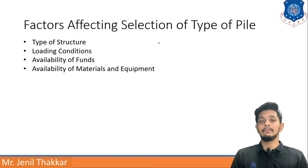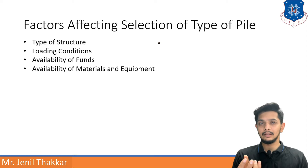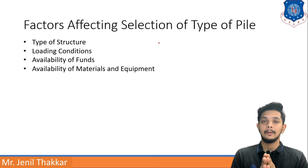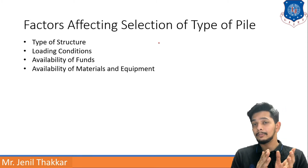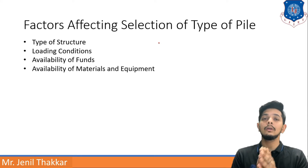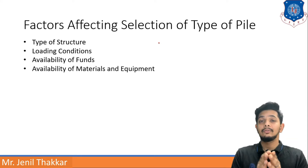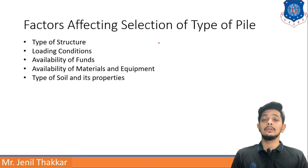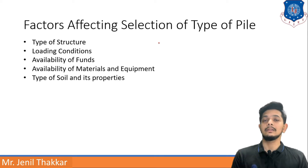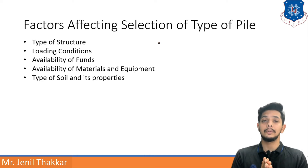Another factor is availability of materials and equipment. If material and equipment cannot be transported to a remote place, you should choose the pile type accordingly. For example, if you are choosing a precast pile with an enormous length and large diameter, you have to transport it from the casting site to the actual site. If that transfer is not possible, you must choose accordingly. Also consider type of soil and its properties — if the soil is loose or stable, different pile types apply.